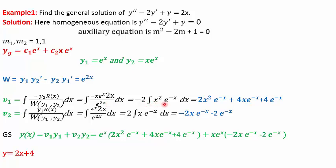Solving the integral by parts gives v1 = 2x²·e^(−x) + 4x·e^(−x) + 4e^(−x). Similarly, v2 is the integral of y1·r(x)/W dx. Substituting y1, r(x), and W, we get 2∫x·e^(−x) dx, which gives v2 = −2x·e^(−x) − 2e^(−x). Substituting v1, y1, v2, and y2 into y = v1·y1 + v2·y2 and simplifying, the general solution becomes y = 2x + 4.